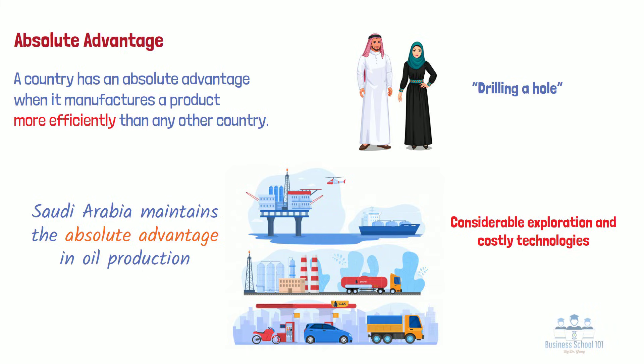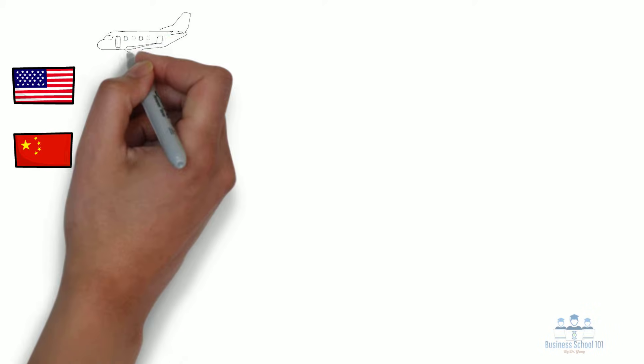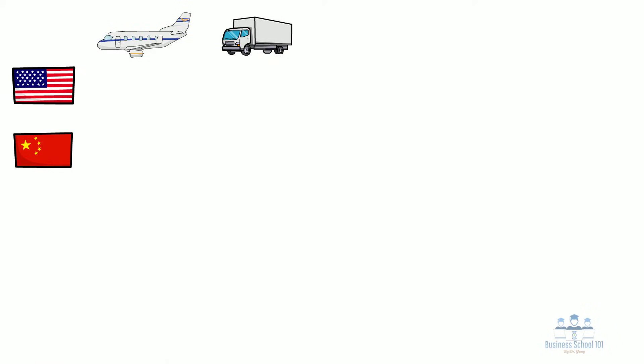Economists suggest that two countries can benefit from engaging in trade by specializing in the production of goods in which each country has an absolute advantage. To better understand this logic, let's use a simplified example and assume that there are only two countries, the United States and China, engaging in trade, and that both countries can only produce two types of goods: planes and trucks. Please keep in mind that international trade doesn't actually look like this in real life — there are obviously more than two countries and they produce much more than two types of goods. However, for the sake of learning, we are going to simplify the underlying logic of international trade, which can be extended to the real business world.